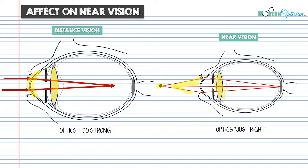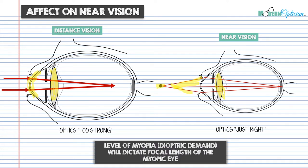Not all myopia is created equal. In this scenario, we can assume about 40 centimeters of working distance, which would be appropriate for roughly a minus 2 to minus 3 myope. If the myopia is lower, the near object will be clear further away — as myopia approaches zero it approaches normal vision or emmetropia — and that reduced focal length gets moved further back, eventually to infinity. The dioptric demand will dictate the focal length of the myopic eye, which is essentially the small mechanism behind why myopia works for near vision.